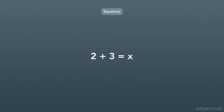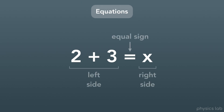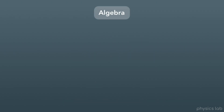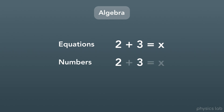Let's take a closer look at equations. Every equation has three things: a left side, a right side, and an equal sign in the middle. An equation is basically a statement that says the left side and the right side are equal. In algebra we have equations that consist of numbers and variables, and usually our job is to figure out what numbers those variables represent so that the equation is true.